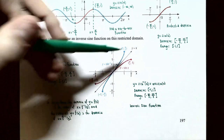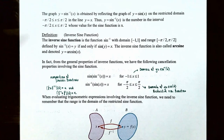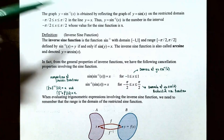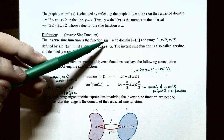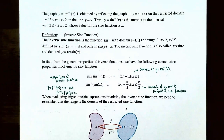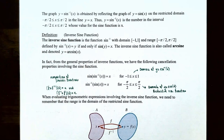This is because the domain of y = f(x) is the range of the inverse function, and the range of the original function is the domain of the inverse function. The graph of y = sin⁻¹(x) is obtained by reflecting y = sin(x) on the restricted domain across the line y = x. So y = sin⁻¹(x) is the number in [−π/2, π/2] whose sine value equals x. The inverse sine function is also denoted y = arcsin(x).